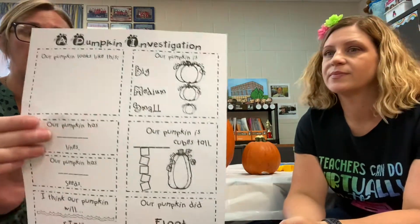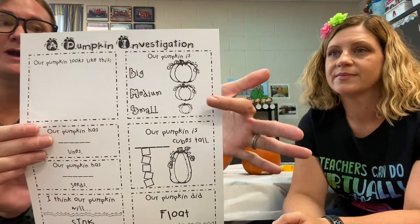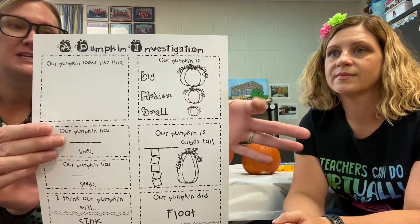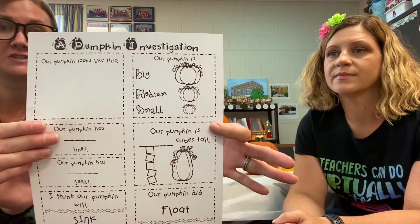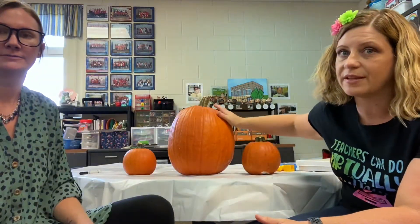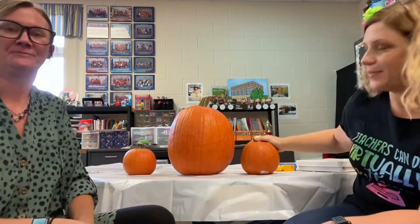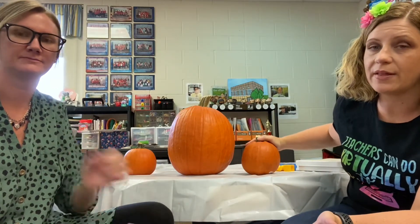The next part of the report talks about the size. So you need to color which pumpkin matches your pumpkin. Is your pumpkin big, medium, or small? If we were coloring ours, the Hulk would definitely be large. Spider-Man would be small. And Iron Man might even be small too, but if you had to compare them to the other pumpkins we have, he's more medium.